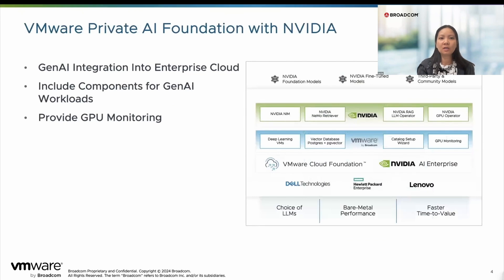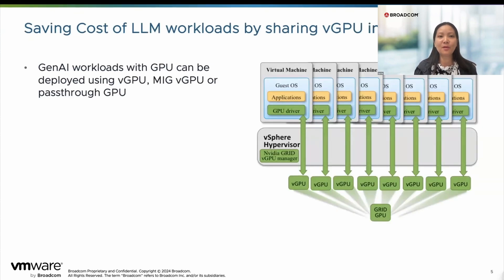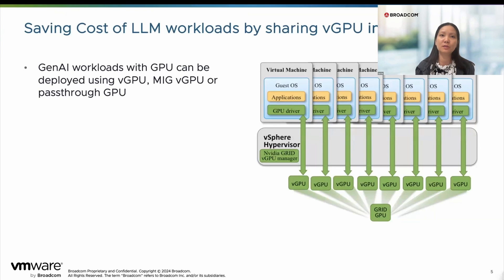VMware also provides our customers a solution called VMware Private AI Foundation, which is a partnership with NVIDIA to provide integrated solutions that include the most important components to deploy Gen AI workloads. For example, we provide deep learning machines that include NVIDIA components ready for large language models, like NVIDIA NIM, NVIDIA GPU Operator, along with other components like vector database and GPU monitoring. One of the very important components to enable large language model workloads is GPU, because as already mentioned, we require a huge number of GPUs for training this workload.